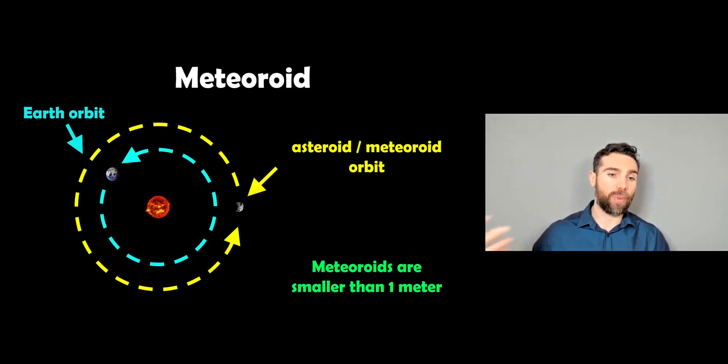Well, it all starts in space, so you've got objects like asteroids which are orbiting the sun. Obviously the earth orbits the sun as well, but a meteoroid is essentially an asteroid which is orbiting the sun. These are objects that are typically smaller than one meter, so they're relatively small asteroids floating around in space. That's a meteoroid.